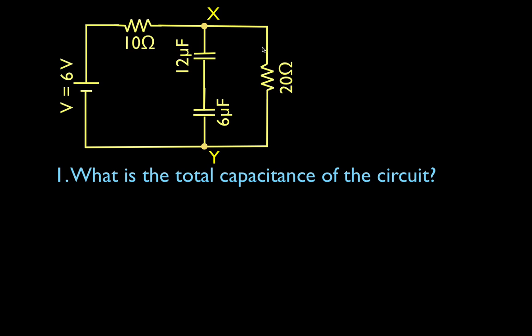What is the total capacitance of this circuit? We have two capacitors only, and we need to find the total capacitance of those two capacitors. Those two capacitors are in series, so we're going to use our series equation for capacitors: 1 over the total capacitance equals 1 over the 6 microfarad capacitor plus 1 over the 12 microfarad capacitor. These are not in parallel — if they were in parallel, we could simply add them: 6 and 12 would be 18.